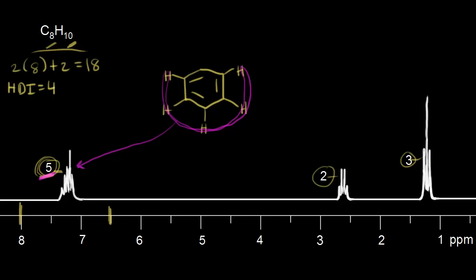Next, let's look at this signal: two protons, so that must be a CH2. Counting peaks — one, two, three, four — four peaks. Four minus one equals three, so these CH2 protons have three neighbors.